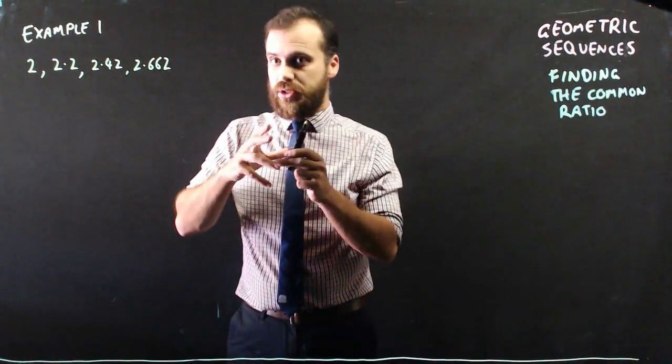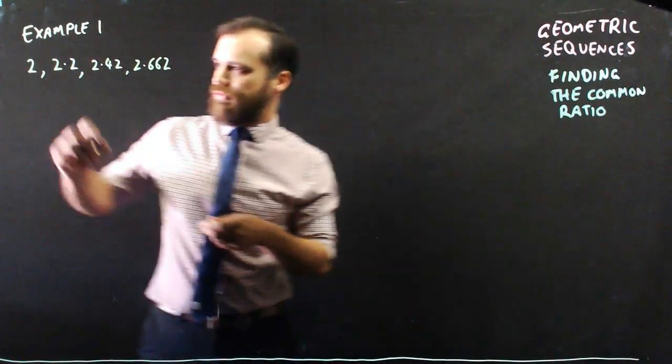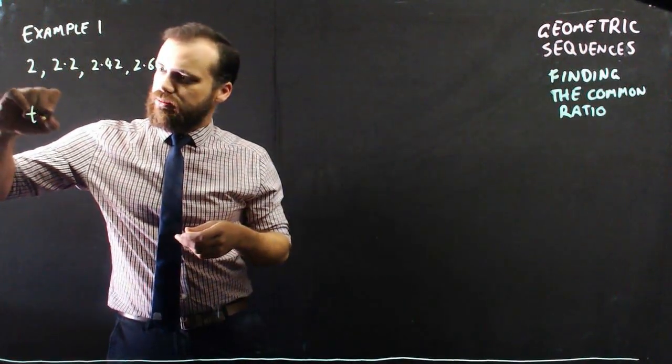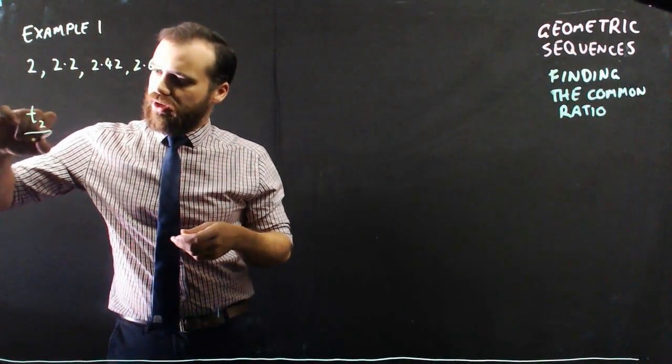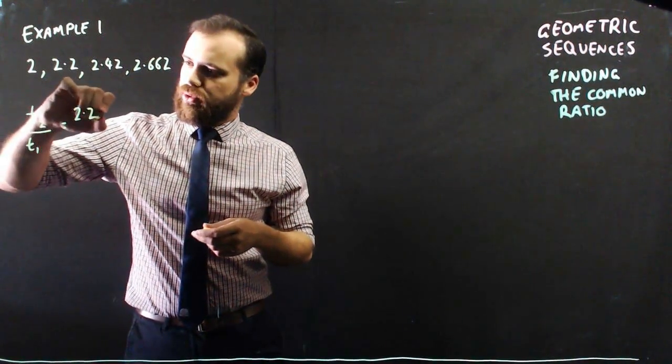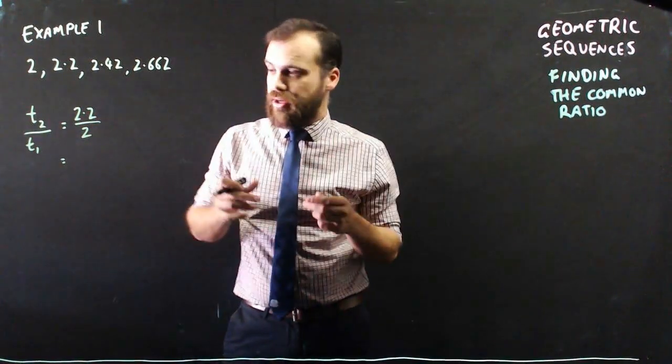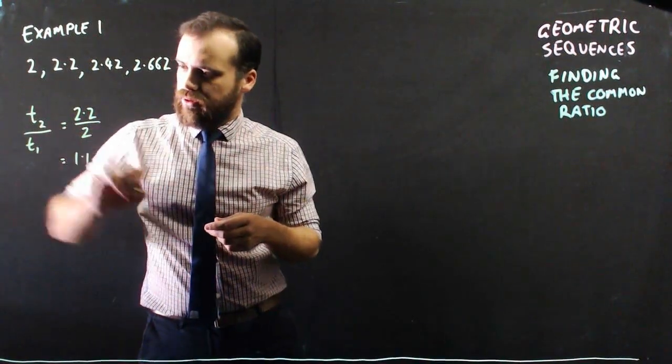You just take one term and divide it by the previous term. So if I do term 2 divided by term 1, that's going to be 2.2 over 2, which I already know is going to be 1.1.